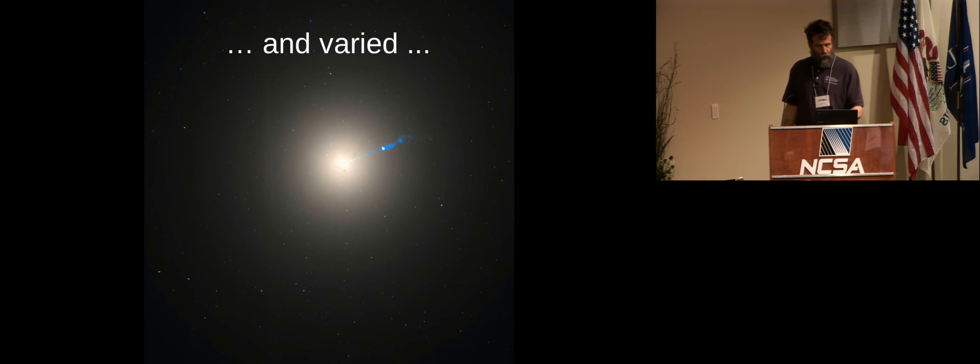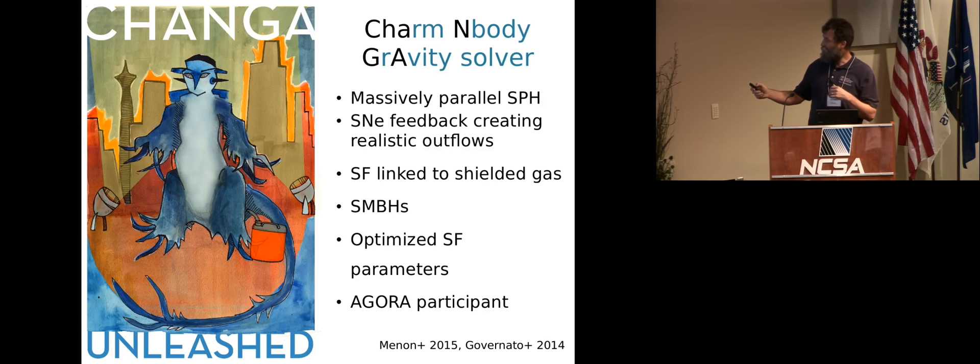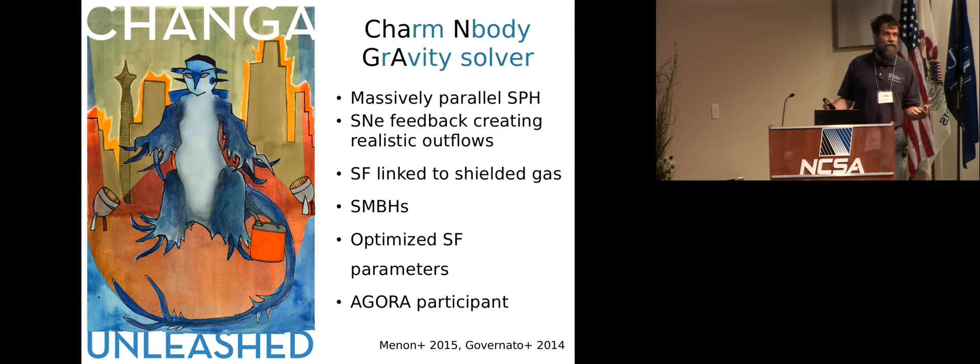So over the years, we've developed a code we call Changa. The main point, the reason I'm here is that it's a massively parallel smooth particle hydrodynamics code, but we've also implemented a number of physics features, such as the supernova feedback. Mike showed you pictures of that, modeling where the stars form based on the state of the gas. SMBH is supermassive black hole, so these large black holes that we infer are in the centers of galaxies, including our own Milky Way, and optimizing all these parameters to produce realistic galaxies. And also, like Mike, we are in a code comparison project, where we're trying to verify, among all the cosmological simulators, that we are reproducibly introducing the physics into our code.